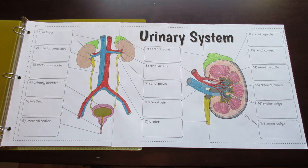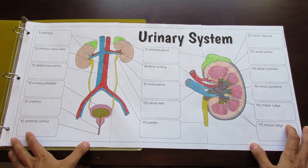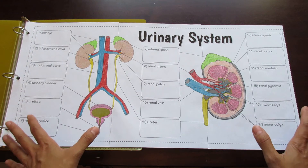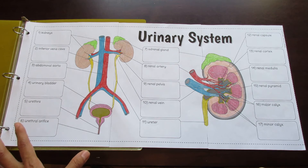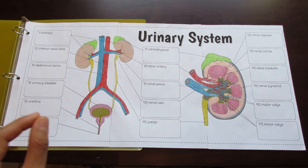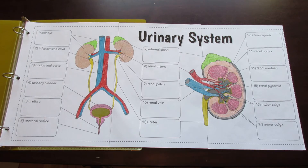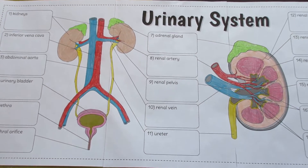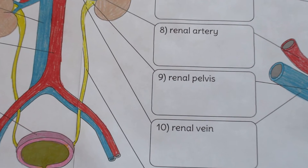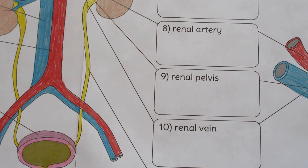This particular foldable is one of the several options I provide, and this one happens to be the most comprehensive for helping to lead students through a structured and guided lesson. As you can see, each structure is connected to a numbered box, and this numbered box will allow you to go step-by-step through the lesson.